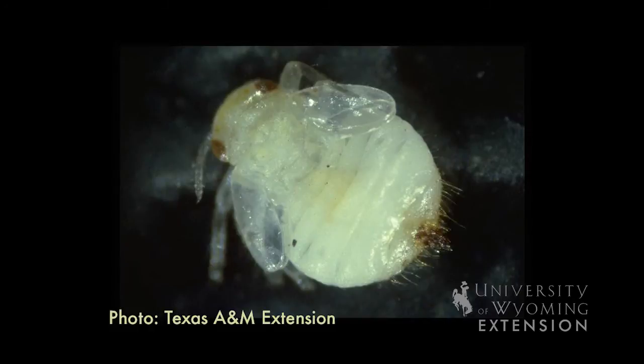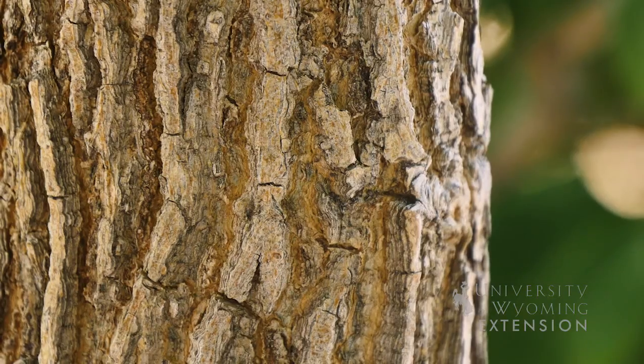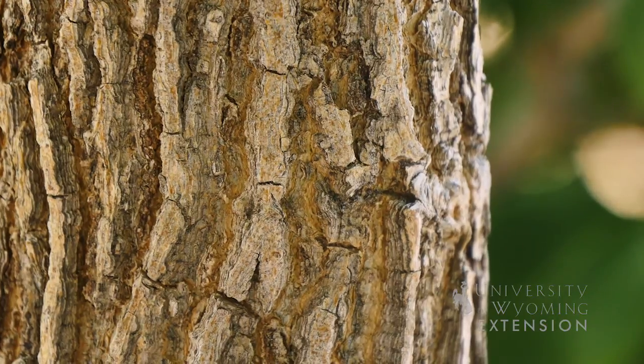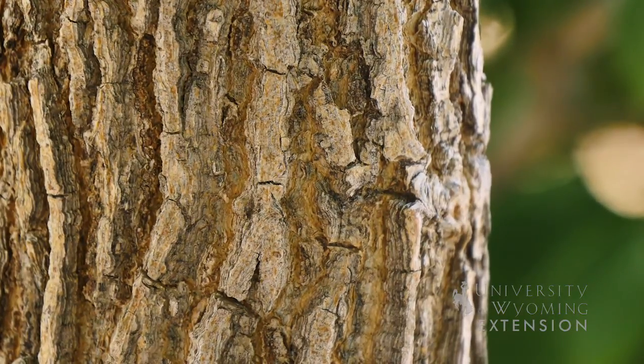These larvae then emerge in the fall, and the adult psyllids overwinter in the crevices of the bark and begin the life cycle again in the spring.